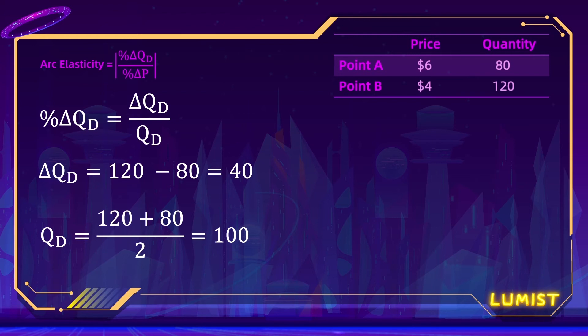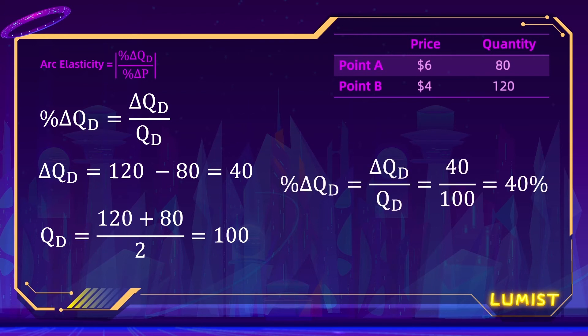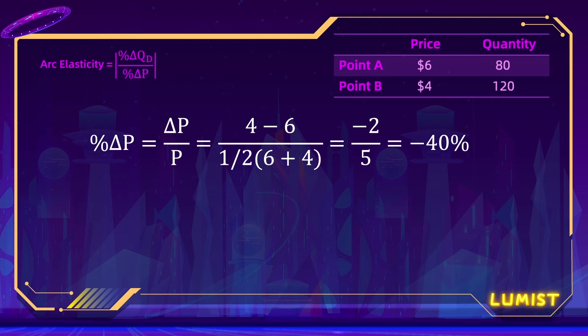Now we have the numerator and the denominator, so we can solve for percentage change in quantity demanded, which is 40%. Now we're going to use the same method to calculate percentage change in price. Our doughnuts were originally selling for $6, but now they're $4. So the change in price is negative $2, and we use the average of these two prices for the denominator — which is $5. So here we have a negative 40% change in price.